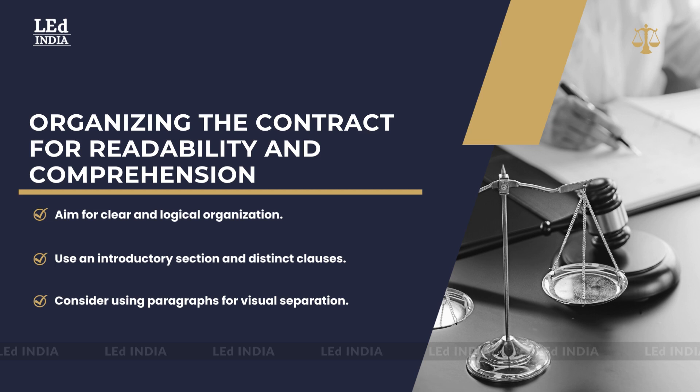Organizing the Contract for Readability and Comprehension. One of the fundamental goals of contract drafting is to ensure that the contract is easily readable and comprehensible for all parties involved. To achieve this, it is important to organize the contract in a clear and logical manner. Begin with an introductory section that provides an overview of the agreement, followed by distinct sections or clauses that address specific aspects of the contract. Consider using paragraphs for individual provisions to enhance readability and create visual separation.